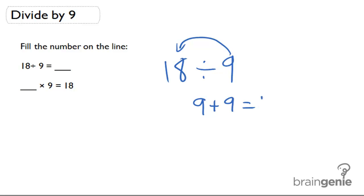9 plus 9 gives me 18 actually. So 9 goes into 18 two times because we had to do 2 additions, 2 nines. We had to add 2 nines. So that's going to be 2.